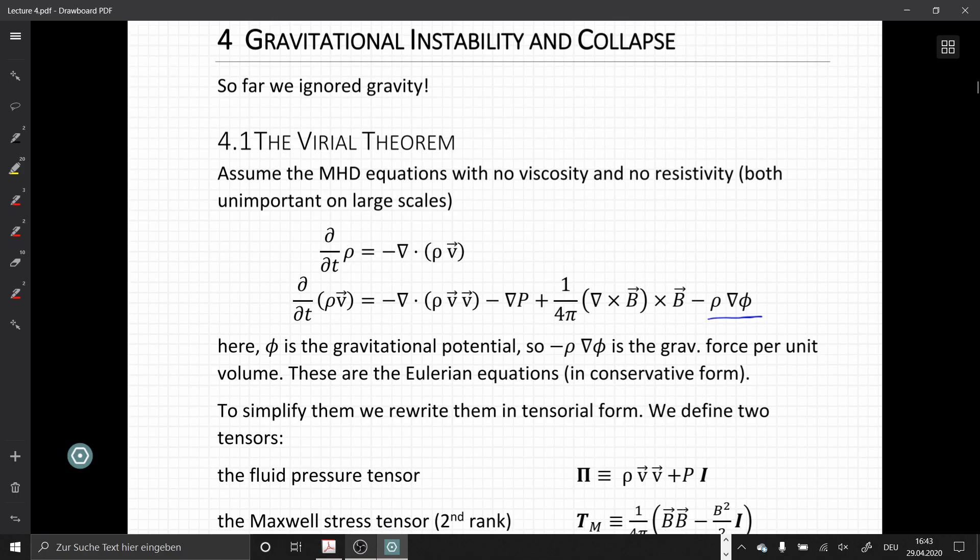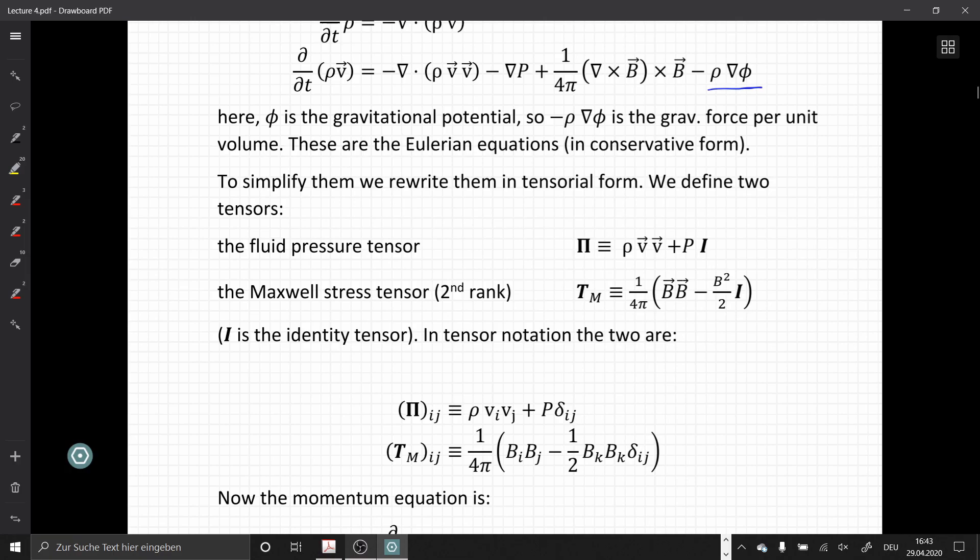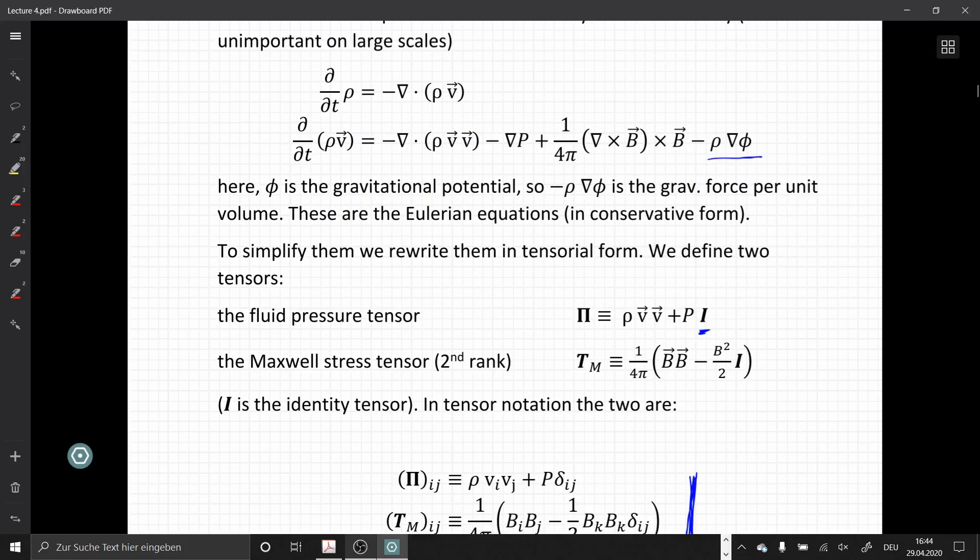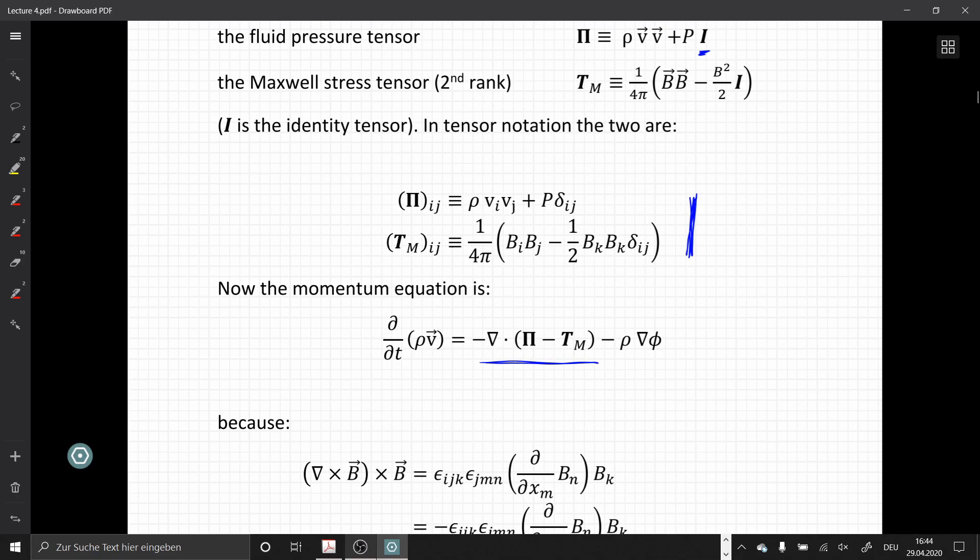To simplify them, we rewrite them in tensorial form. And for that we define two tensors, the fluid pressure tensor pi and the Maxwell stress tensor Tm. Here the I tensor is the identity tensor. In tensor notation, the two can be given in this form. And with these newly defined tensors, we can write the momentum equation in a very simplified form, where we combine the first three terms here just in these two tensors.